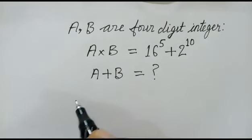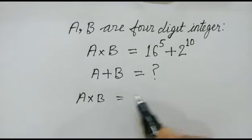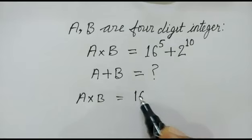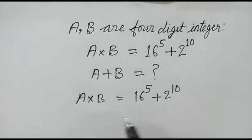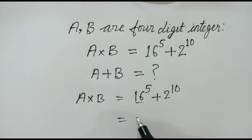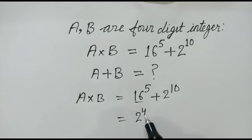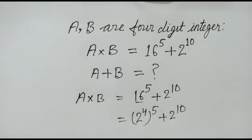So let's start. As we have given A into B is equal to 16 to the power 5 plus 2 to the power 10. Now this can be written as 2 to the power 4 whole power 5 plus 2 to the power 10.